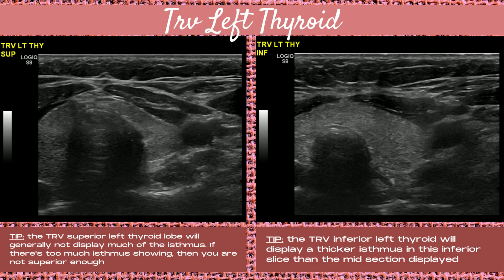Next, image the transverse left thyroid superior and inferior poles. Generally when imaging the superior poles, you're not going to visualize much isthmus — if you see a lot of isthmus, you haven't angled up superiorly enough. However, some people have a very small superior section; in those cases, use discretion. Try to get high enough where you're not showing much isthmus, but gauge it based on how large the superior portion of the thyroid lobe is.